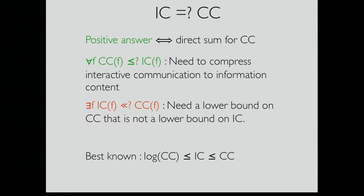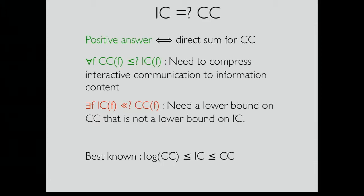A nice thing about information complexity is that it has the direct sum property: if you have k instances of a problem, it requires at least k times the information to solve all k instances. We would like this to be true for communication complexity. At the moment, you have to either prove a lower bound on information complexity and show it's tight, or work very hard using ad hoc methods. If we had this theorem, we would get it for free for all communication complexity.